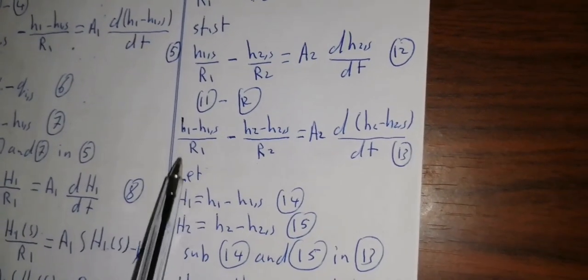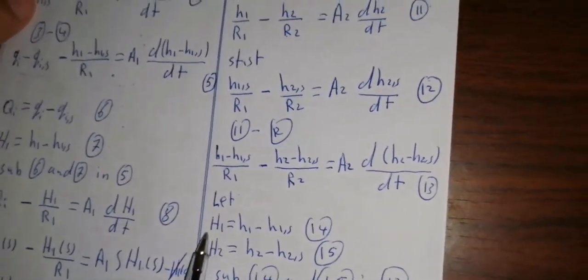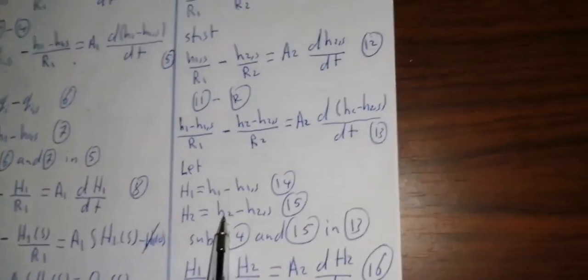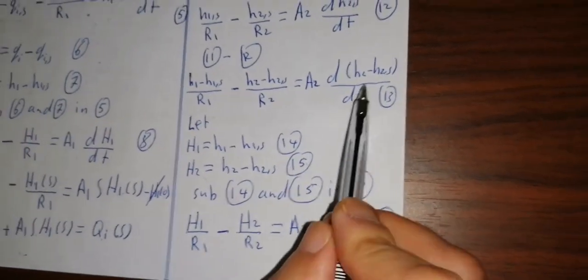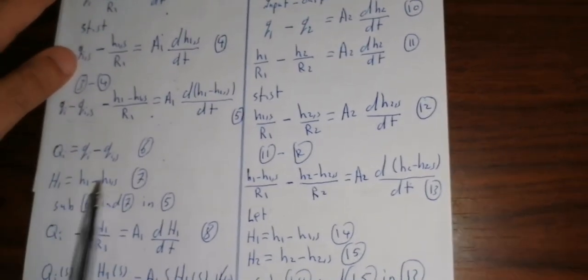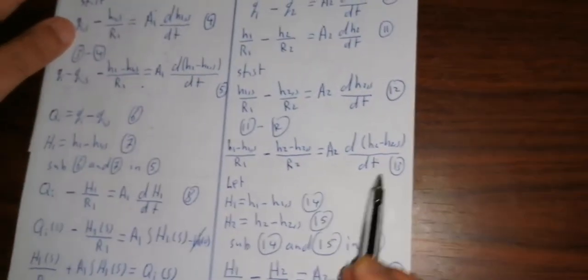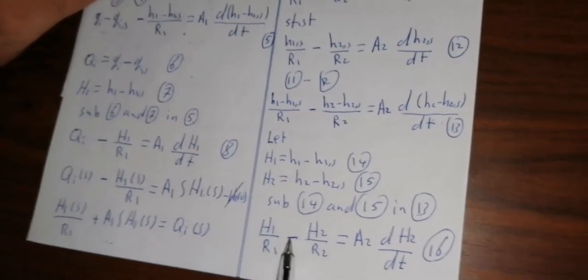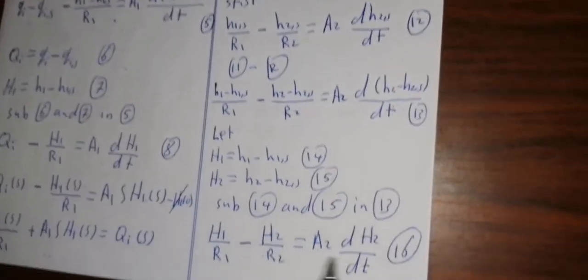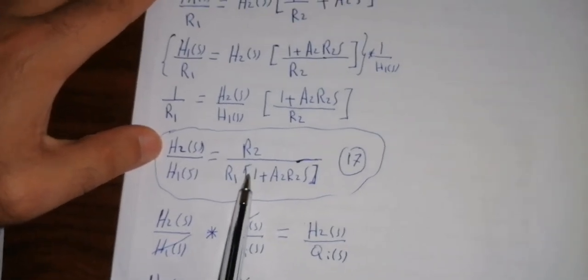To make the system simpler, we apply the same mathematical technique as before. The deviation variable equations are rearranged and the Laplace transform is applied. After organizing the terms, we reach a transfer function: H2(s)/H1(s) = R2 / (1 + A2·R2·s).